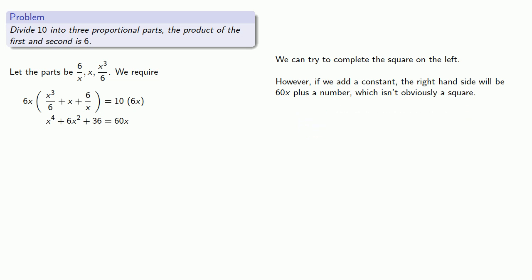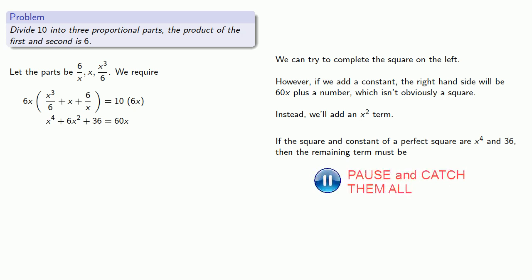Let's switch things around a bit. Instead of adding a constant term to make a perfect square, let's add an x squared term. The question we have to ask ourselves is if the square and constant of a perfect square are x to the fourth and 36, then what's the remaining term? The remaining term must be 12x squared. So we'll want a 12x squared on the left-hand side, and we can get that by adding 6x squared.